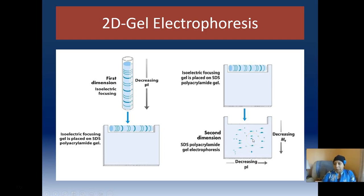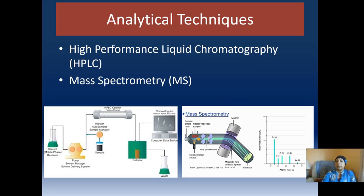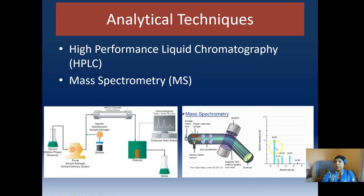Each spot on this 2D gel will only have a couple of proteins at most. Those specific spots can be excised, digested, and then examined through mass spectrometry or HPLC to identify exactly what protein is there. The analytical techniques used here are high-performance liquid chromatography (HPLC) or mass spectrometry. We inject our purified protein sample into the detector; the chromatogram shows how many different proteins are present. In tandem mass spec, it will give you the amino acid sequence so you can identify the proteins of interest in that sample.